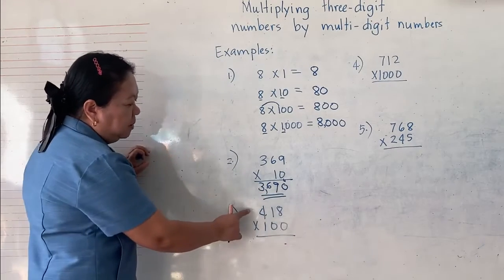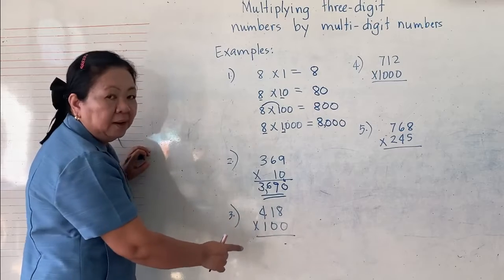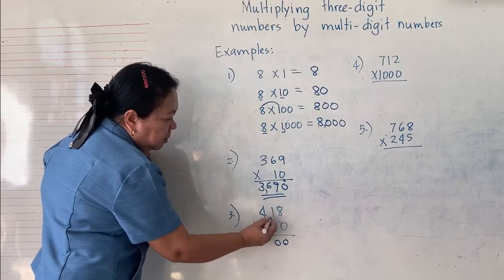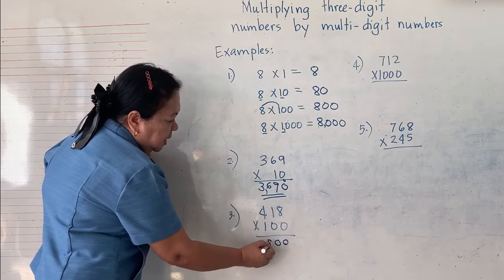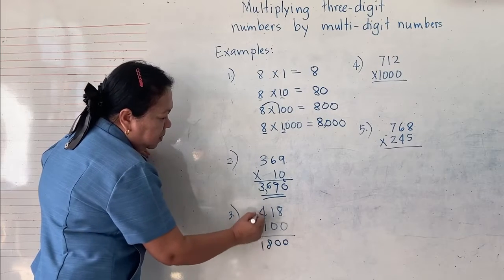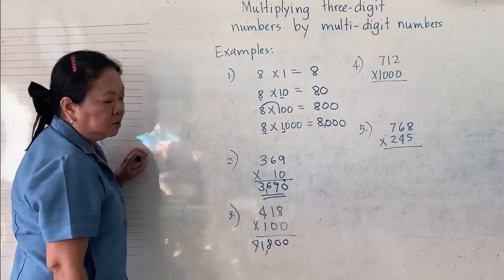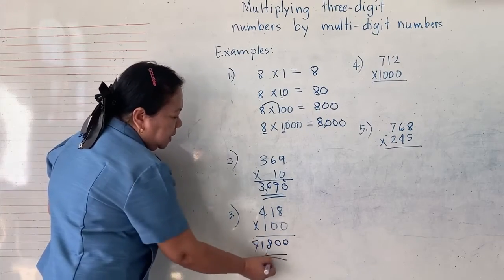Then, let's say we have 418 times 100. We will just write down 0s, 0s. And then, multiply 1 times 8 is 8, 1 times 1 is 1, 1 times 4 is 4. Therefore, it is equal to 41,800.